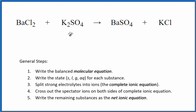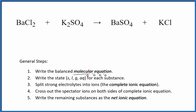In this video, we'll write the net ionic equation for BaCl₂ plus K₂SO₄. This is barium chloride and this is potassium sulfate. The first thing we need to do with net ionic equations is balance the molecular equation. This is our molecular equation.